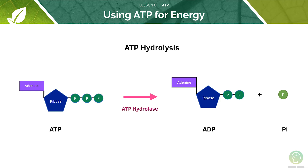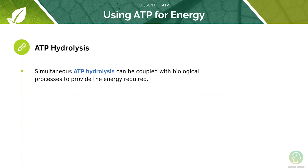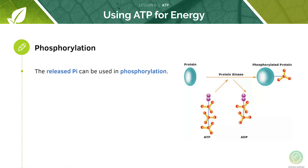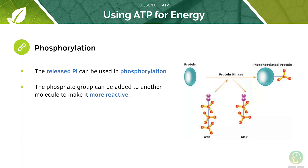The hydrolysis of ATP forms ADP and an inorganic phosphate called Pi. This is catalyzed by ATP hydrolase, which can also catalyse the breakdown of ADP into AMP and a second inorganic phosphate group. When energy-requiring biological processes occur, there can be simultaneous ATP hydrolysis to provide the energy required. The released inorganic phosphate can be used in further phosphorylation — the phosphate group can be added to another molecule to make it more reactive. This mechanism is carried out by a group of enzymes known as kinases.